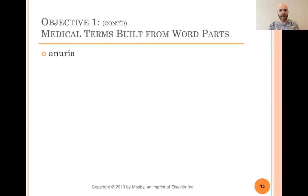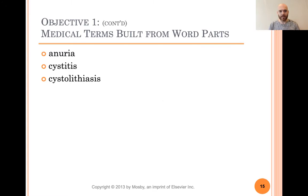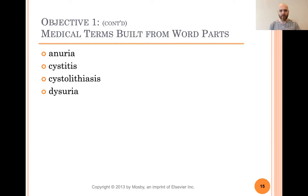Let's build some terms. Anuria means without urine. Cystitis — cyst means bladder or fluid-filled sac, so this is inflammation of the bladder. Cystolithiasis — we've got cyst (bladder), lith (stones or calculi), and -iasis (condition of) — so this is the condition of stones or calculi in the bladder.